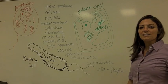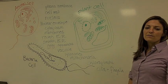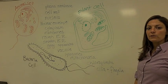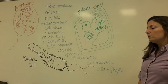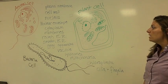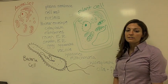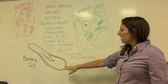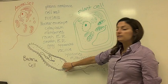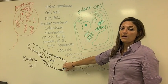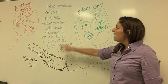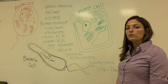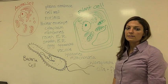Hi guys. So today in class we started off our cells unit. We talked about prokaryotes and eukaryotes. And tonight we're talking about some of the parts that are in different cells. So up here we have a bacteria cell — that's a prokaryotic cell. And then there's an animal cell and a plant cell. Those are both eukaryotic cells.